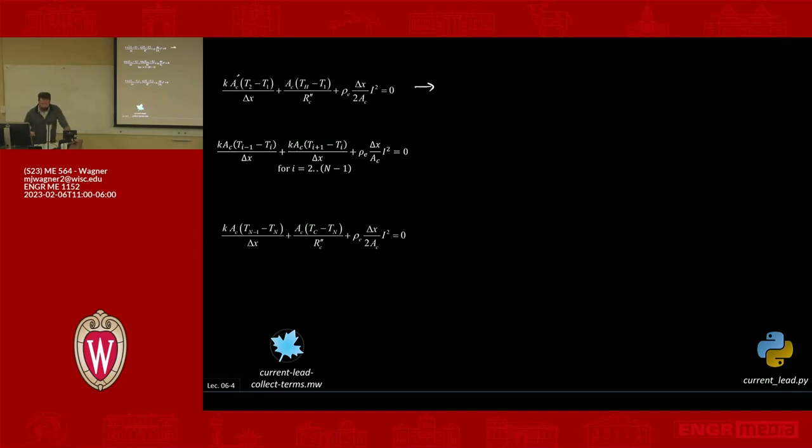So looking at this first node, what do I see that is multiplying, say, t1? That's going to be kA/delta_x, and then I have a minus 1. So that's multiplying t1. I've also got multiplying t1 over here, ac/r_double_prime_c, and a minus sign. So grouping all that together would look something like t1 times minus kA_c/delta_x minus ac/r_double_prime_c. And this stuff here is going to be my coefficient, because all of that is constant. There's nothing variable dependent in that term. So this is going to be a_1,1.